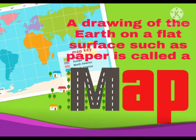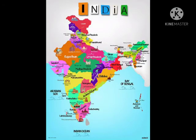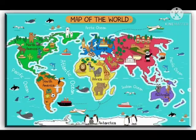The next topic for today is the map. What is a map? A map is a drawing of the earth on a flat surface such as paper. Can you see, children, the map of India in this picture? Can you spot our state, that is Uttar Pradesh? Now, the map which is displayed on your screen is the map of the world. Can you spot your continent, that is Asia?